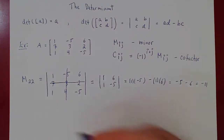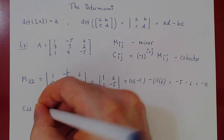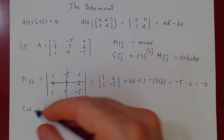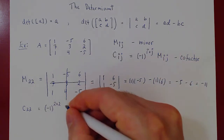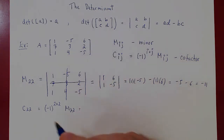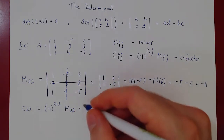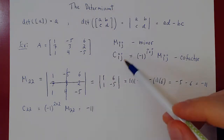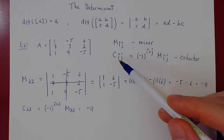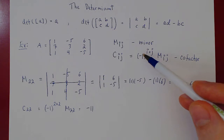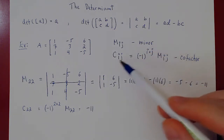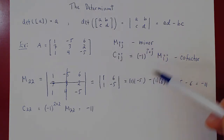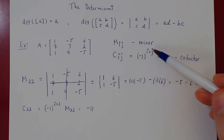The corresponding cofactor C_22 is negative 1 to the 2 plus 2, which is the 4th power, times M_22. Negative 1 to the fourth is just 1, so C_22 equals M_22, which is negative 11. Notice: if the row index plus column index is even, we get positive 1, so the cofactor equals the minor. If the sum is odd, negative 1 to an odd power is negative 1, so the cofactor is the negative of the minor.